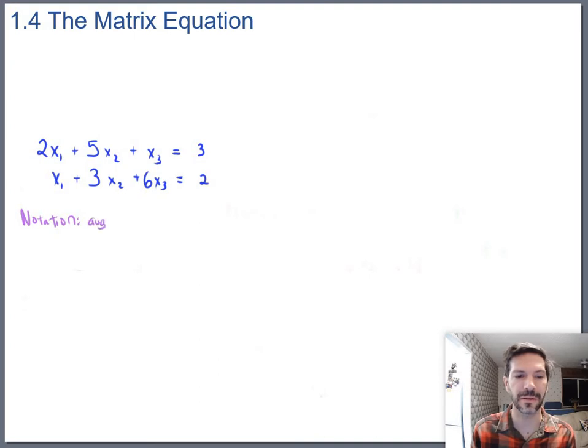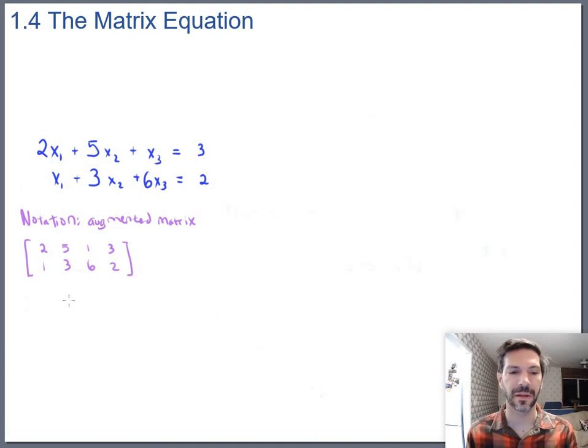So by way of notation, one of the ways that we have is the augmented matrix. That's what we met pretty much on the first day of class. We would just take the x's and equal signs off and we would have 2, 5, 1, 3, 1, 3, 6, 2. And then to solve that, of course, we would do the reduced row echelon form, which I won't do right now.